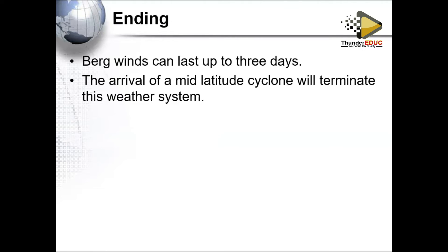Berg winds can only last about two to three days. Around coastal regions like Cape Town and other eastern parts of South Africa, it is winter and you expect cold conditions, but within a day or two temperatures can go above 30 degrees Celsius at the coastal region because of the warm dry descending winds.